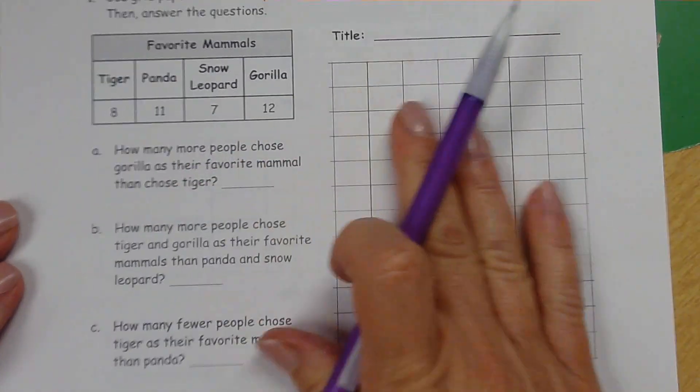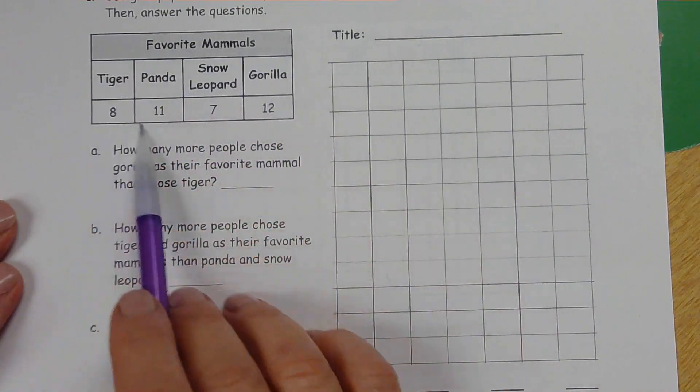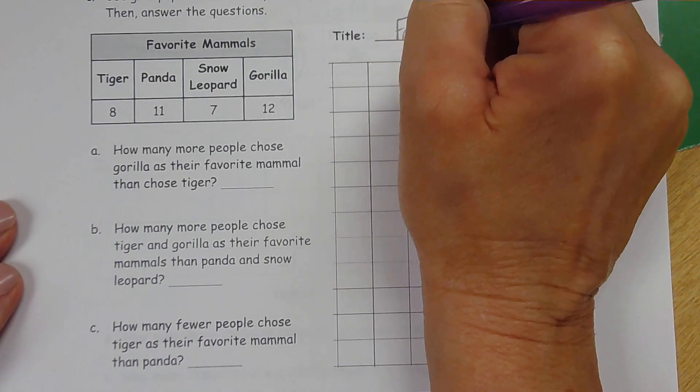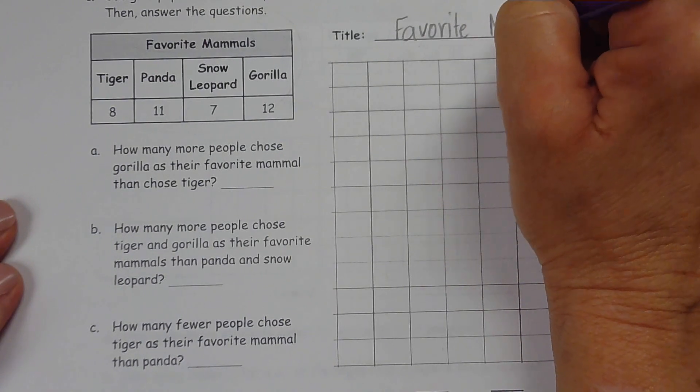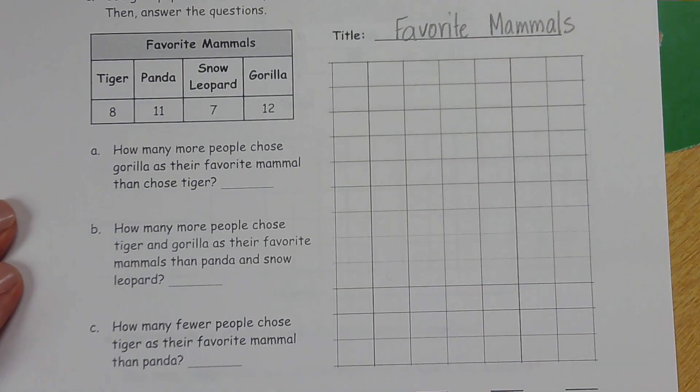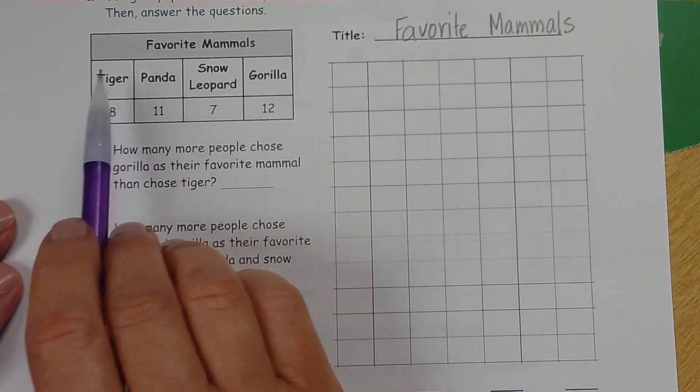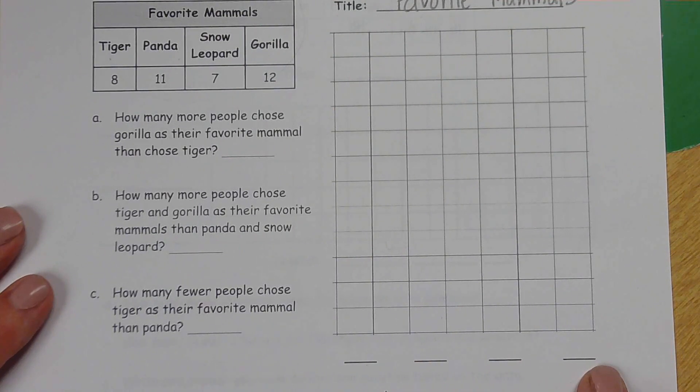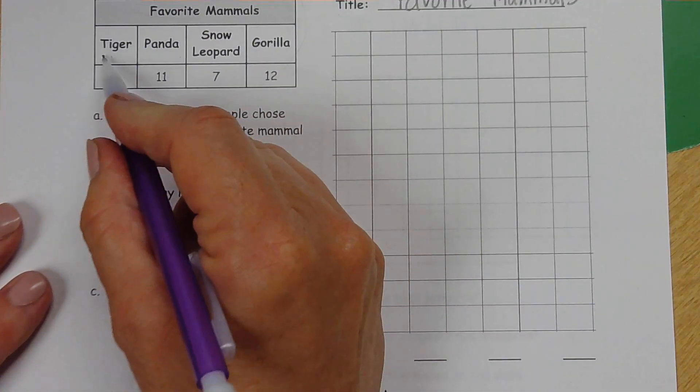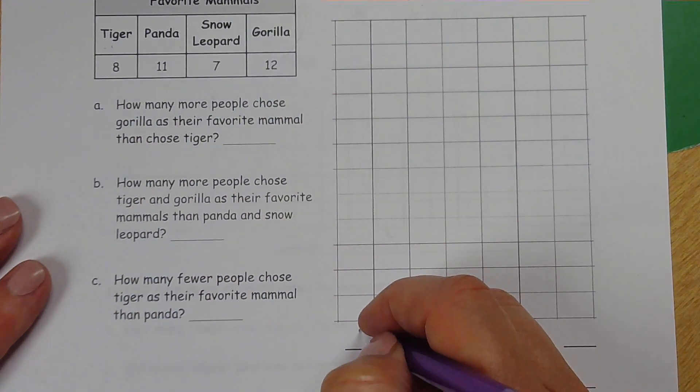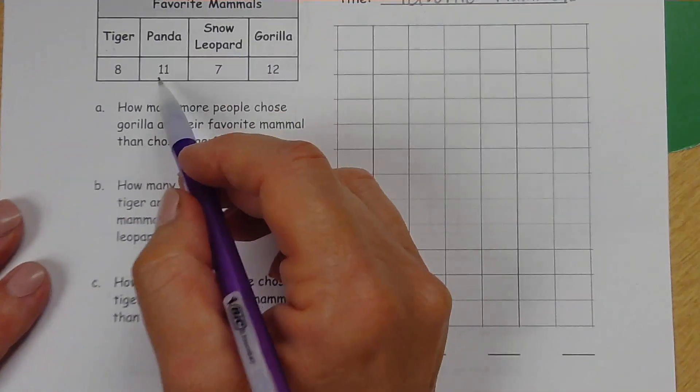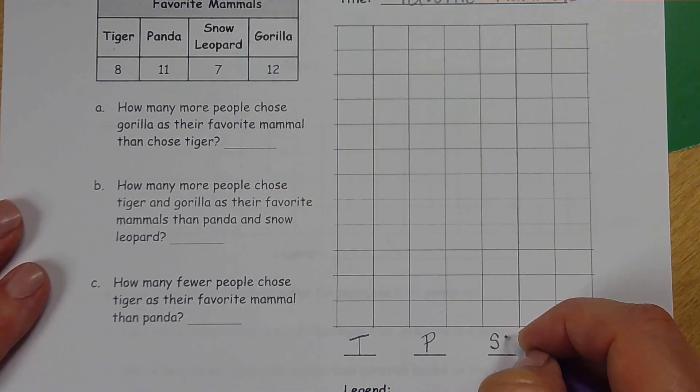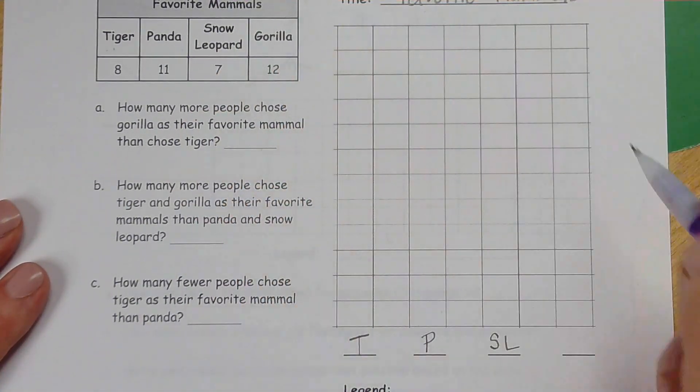We're going to use this grid. We have to put the title. So looking at our table, this up here is our title: Favorite Mammals. We're also going to have to list our categories: Tiger, Panda, Snow Leopard and Gorilla. Boy, do I not have enough room. I'm just going to put the first letter. So for Tiger in this first line, I'm going to put T. Panda on the second line, I'm going to put P. Snow Leopard, I'm going to do SL. And then for the gorilla, I'm going to put a G.